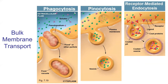So there are our bulk transport methods: phagocytosis, pinocytosis, and receptor-mediated endocytosis. You should know enough to answer a multiple choice question or two about what is going on, and a few definitions like pseudopod and food vacuole.